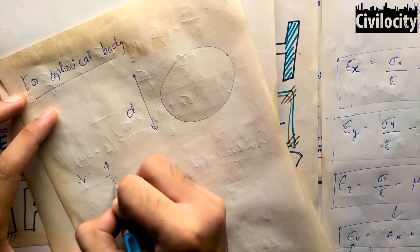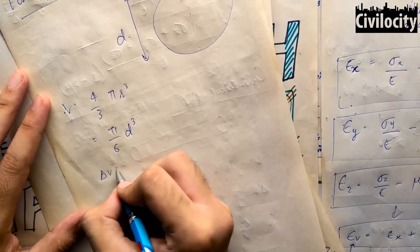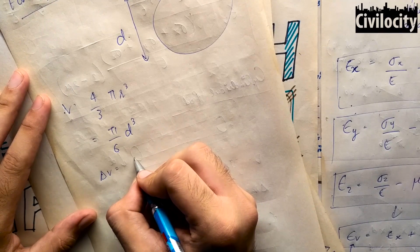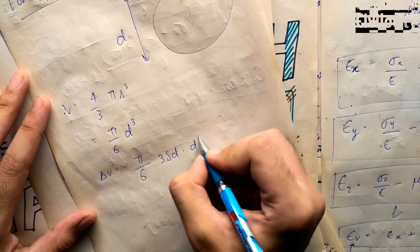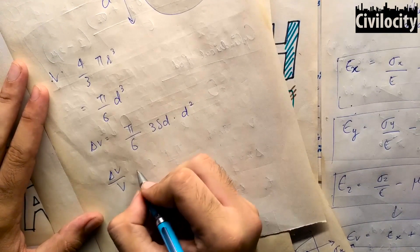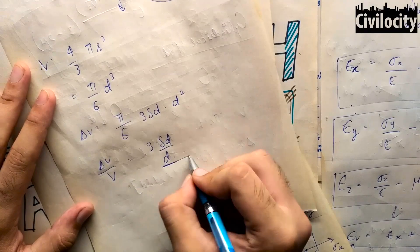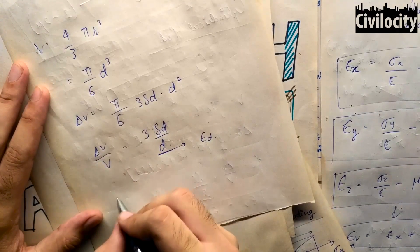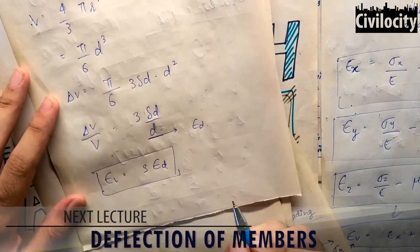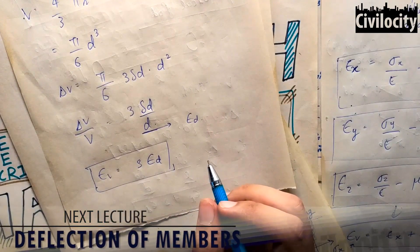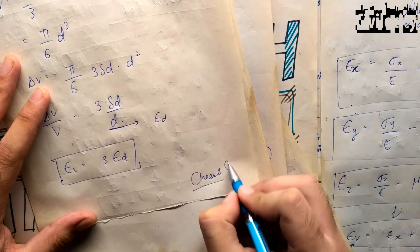For a spherical body, the volume is 4/3·pi·r³. Replacing r with D/2 gives pi/6·D³. Differentiating and dividing by the original volume gives 3·delta D/D, where delta D/D is the diametrical strain. So volumetric strain equals three times the diametrical strain. This was all about Hooke's Law, its applications, stress-strain matrices, and volumetric strain. If you found this helpful, please like, comment, and subscribe.